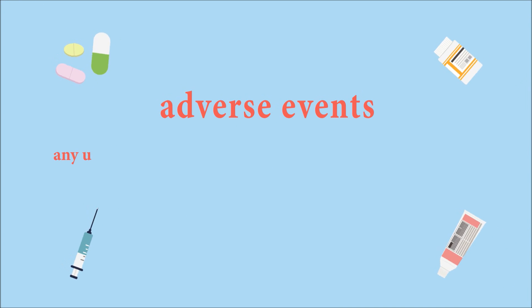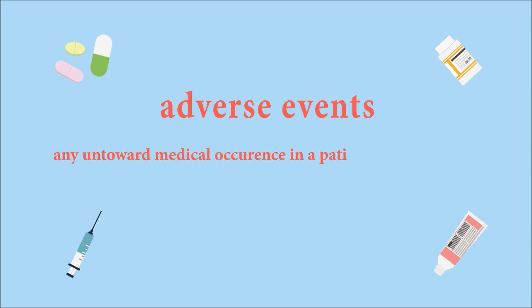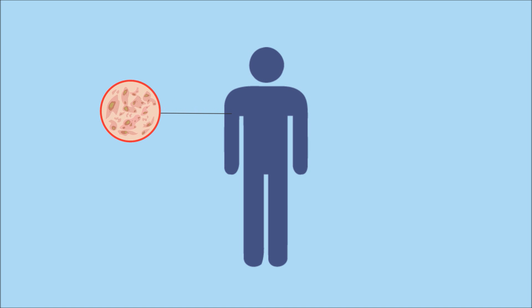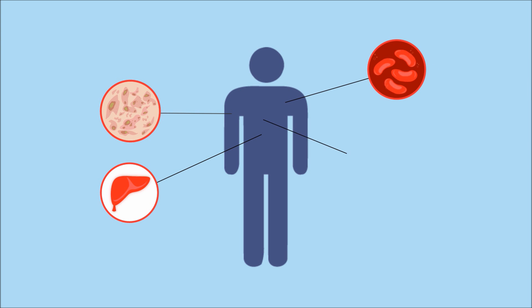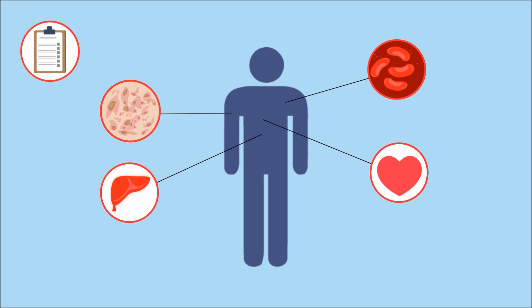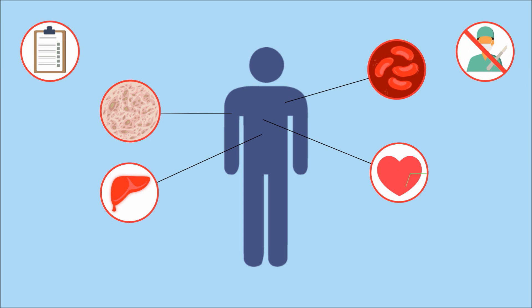Let's find out what is considered an AE. An AE is any untoward medical occurrence in a patient administered a pharmaceutical or health product. There is a wide range of AEs that may occur, including serious cutaneous adverse reactions, drug-induced liver injury, blood dyscrasia and cardiac arrests. Diagnosis of adverse events are usually based on unintended physical signs and symptoms, abnormal laboratory results, changes in vital signs, increase in frequency of the AE, and complications from surgery.